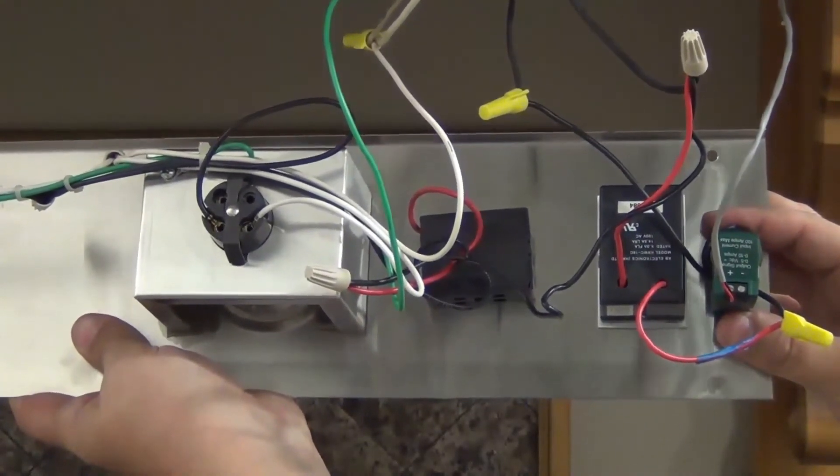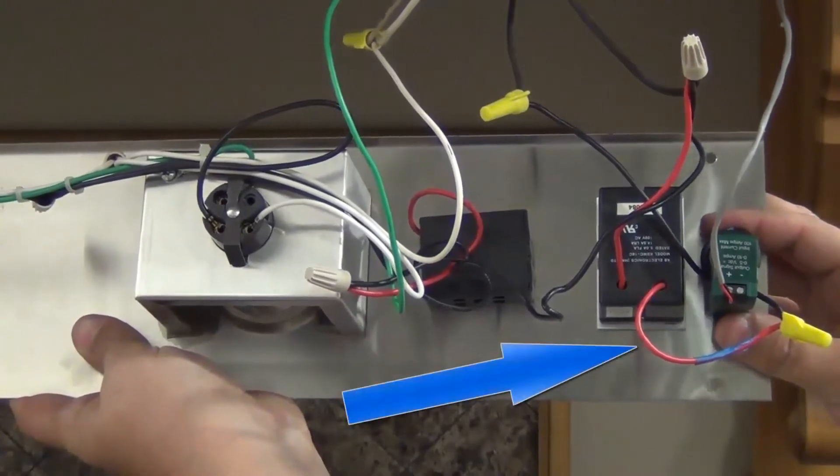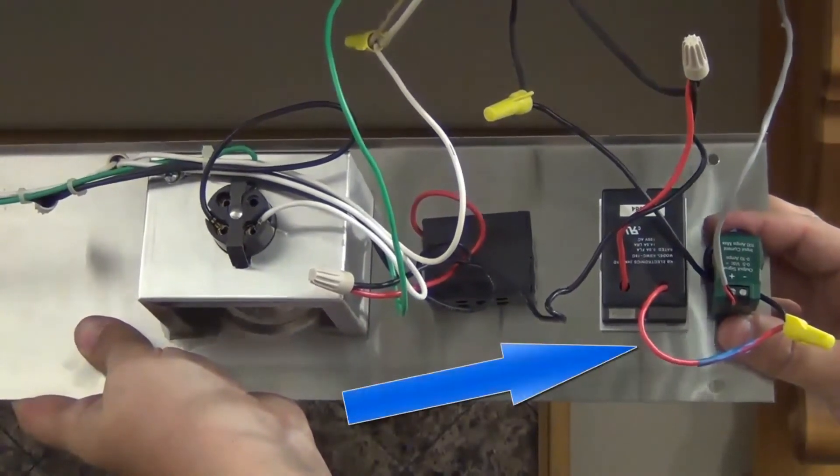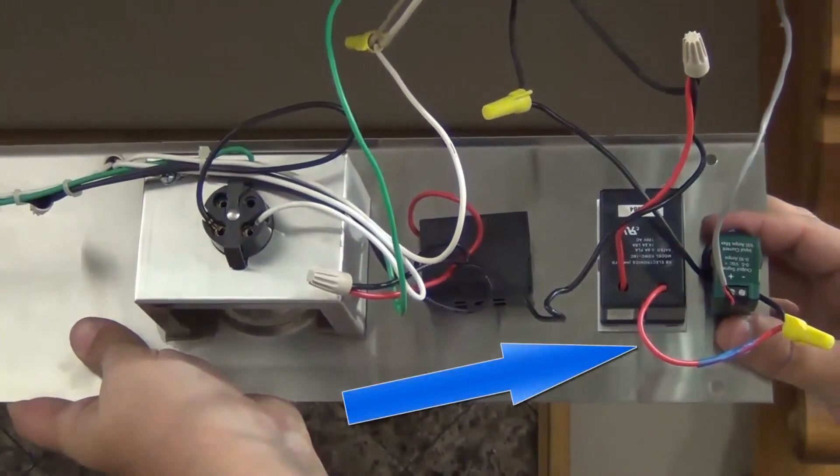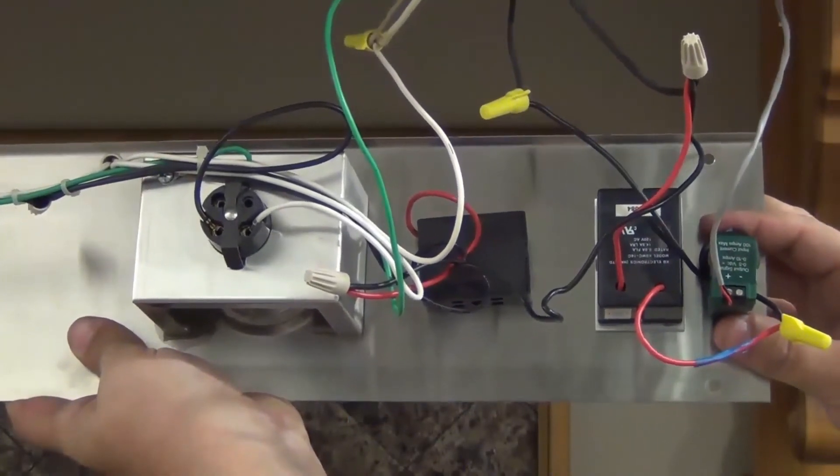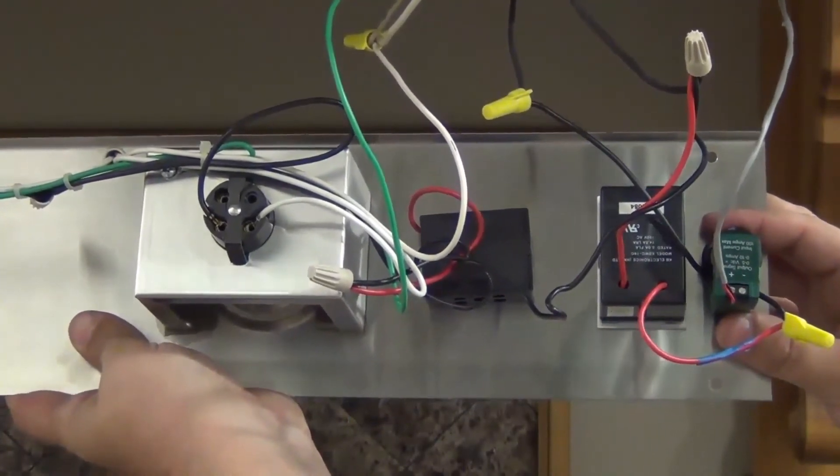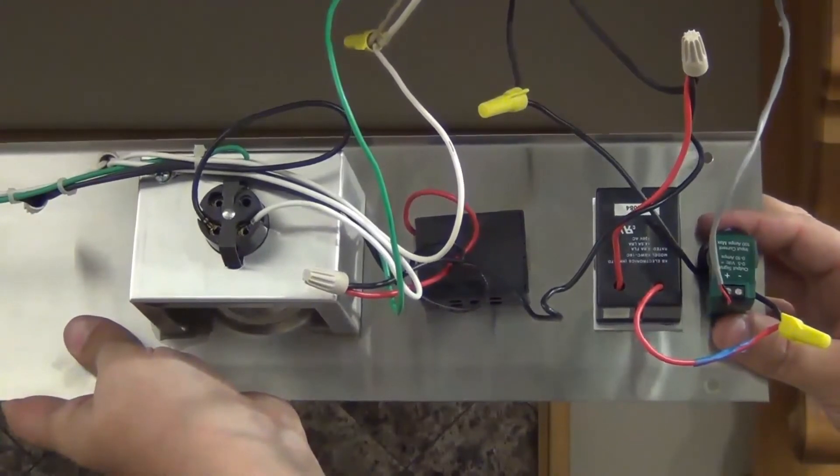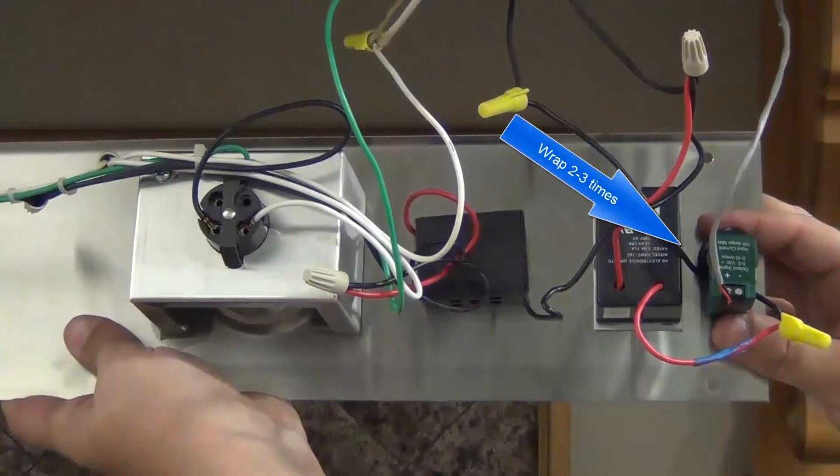The load leg of the exhaust fan speed control is installed into the transducer. However, this transducer can be installed anywhere convenient on the exhaust fan load leg. For applications with load currents less than 1 amp, wrap the fan load leg 2 or 3 times through the sensor aperture so the output will be above 1 amp.